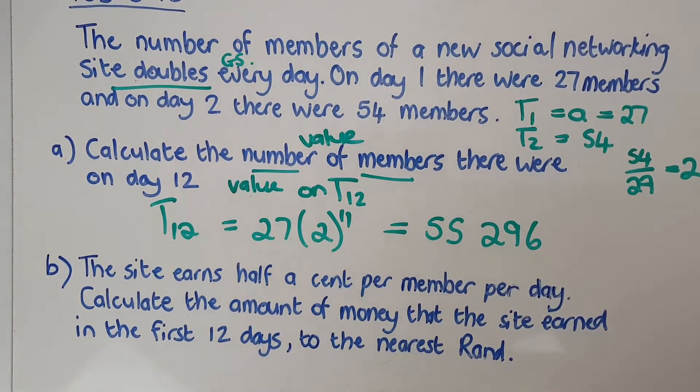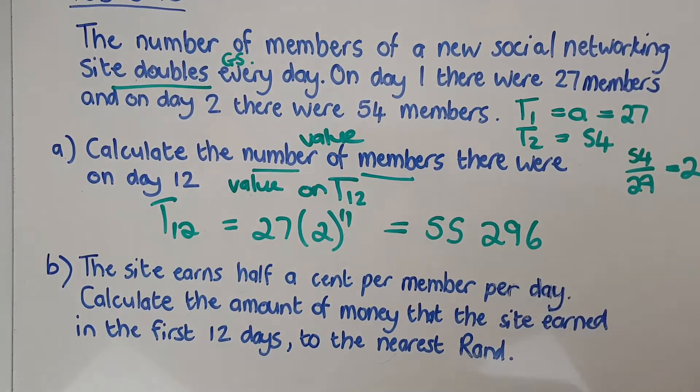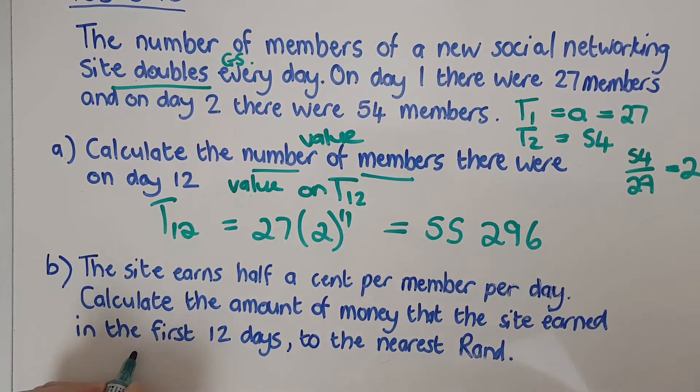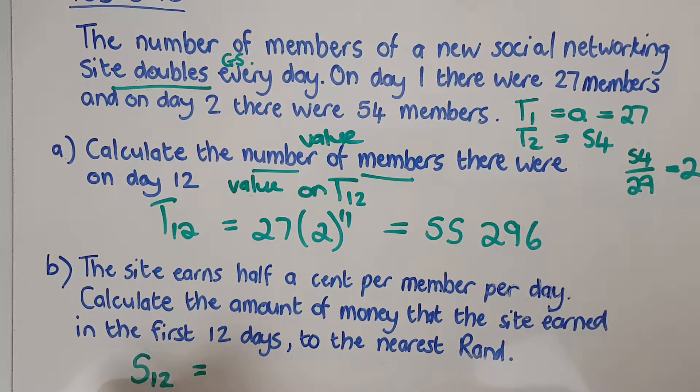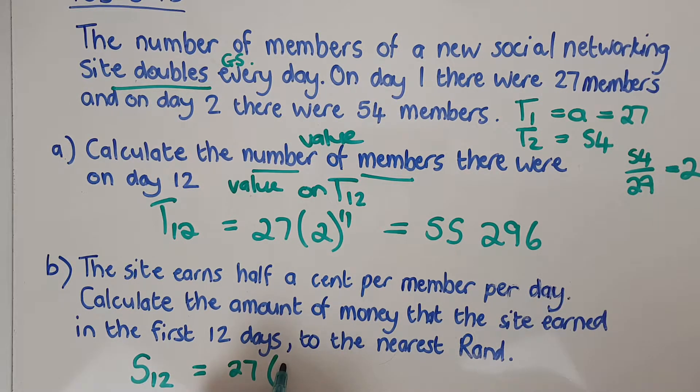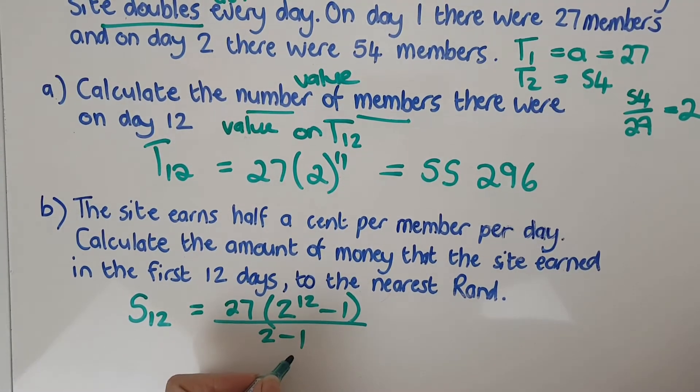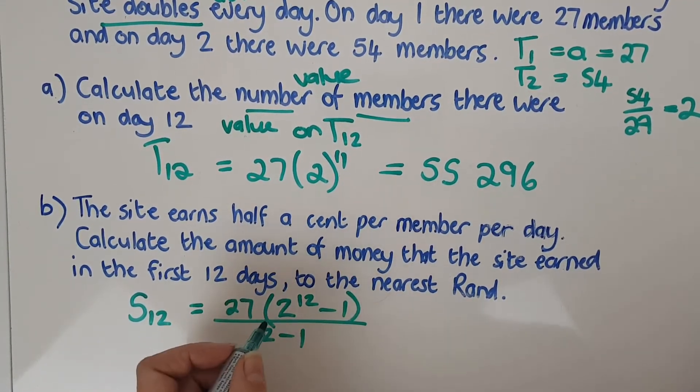So what I've got to do now is I've actually got to get S12. Do I have all the things I need? Do I have A and R and N? I do have A and R. It's going to be the same. And N is now 12. So I'm going to have my A, which is 27. My R is 2. So it's going to be 2. My N is 12 minus 1 over 2 minus 1. Plug and play into calculator.